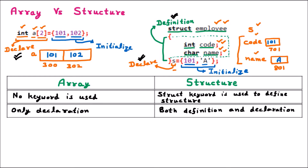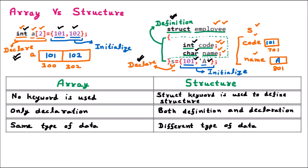The next difference is that during initialization, inside the array we provide the same type of value — in this case integer. But inside the structure we provide different types of values: we gave 101 which is integer, and 'A' which is character. So we can say that array holds same type of data, but structure contains different types of data. Whenever we declare an array, it can take only the same type of data.